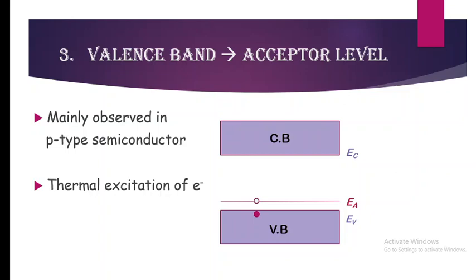The electron is negatively charged whereas the hole is positively charged. Because of the opposite charges and thermal excitation, the electron from the valence band is excited to the acceptor level.